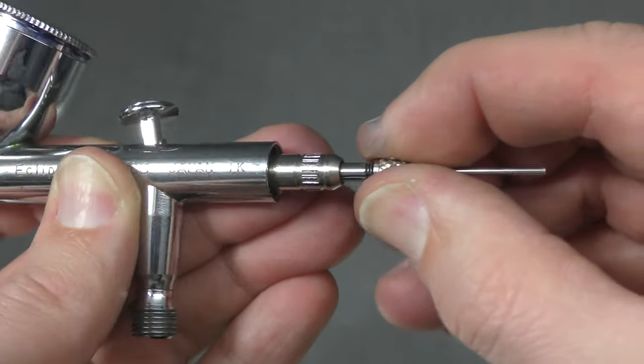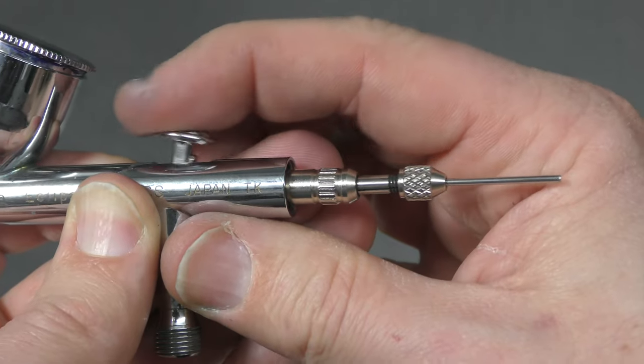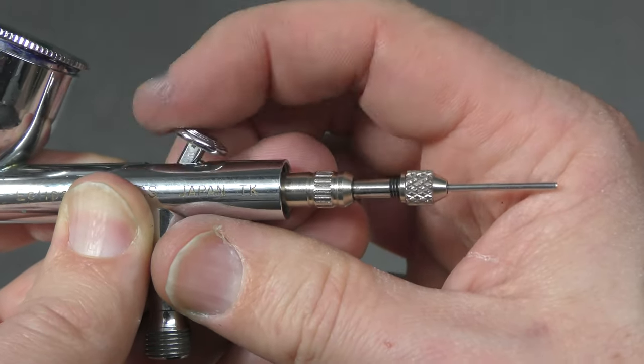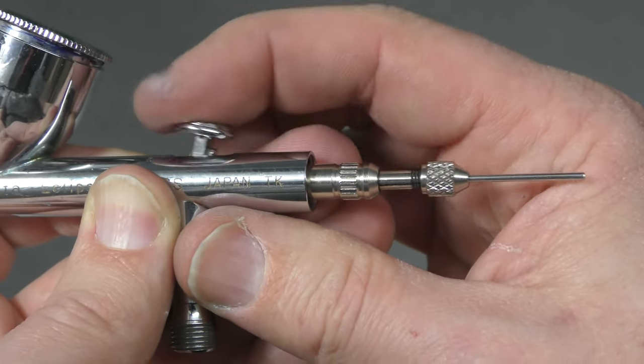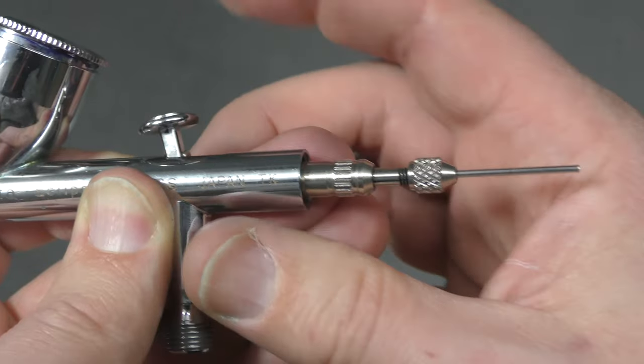If you forget to tighten this and you just go like that you can see the locking nut now isn't moving the needle and then what will happen is you'll put paint in and you'll think you're ready to airbrush. You'll be pulling back and no paint will come out.